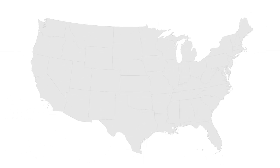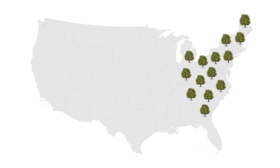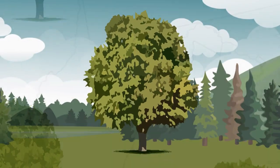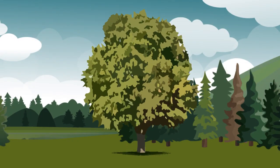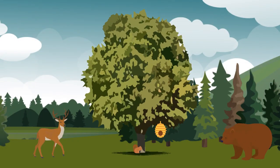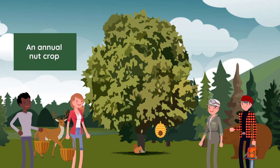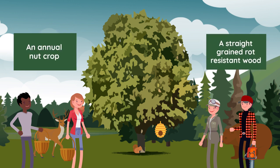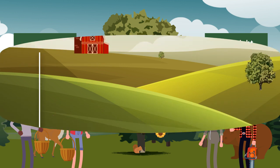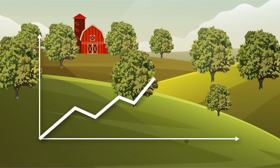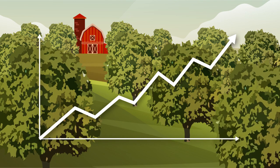The American chestnut was once one of the most important trees in the eastern US. It provided food and habitat for everything from bees to bears. For people, it was used as an annual nut crop and a straight-grained, rot-resistant wood. In some areas, farmers realized more income from the sale of chestnuts than all other farm products.